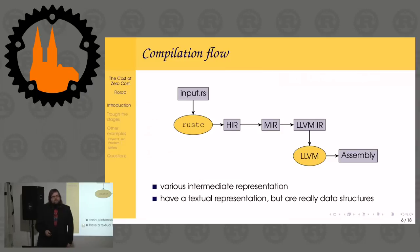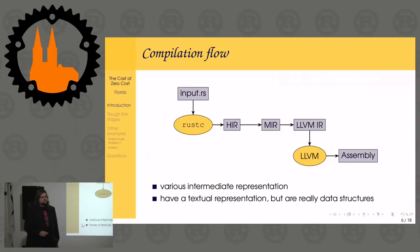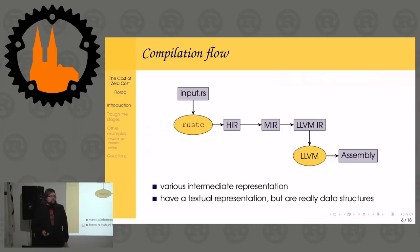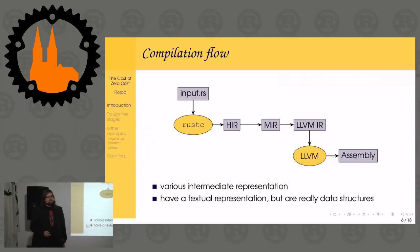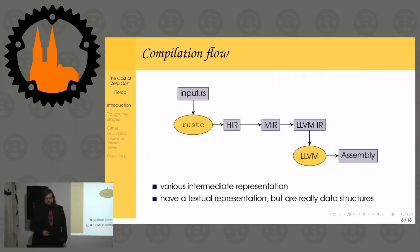What does the compilation flow actually look like in Rust? I've omitted parts that are not observable to us. We start with an input .rs Rust file and pass it into rustc. Then rustc has two intermediate representations: the HIR, the high-level intermediate representation, which is still very close to actual Rust - sort of an abstract syntax tree.